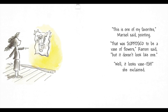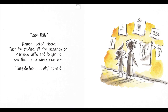"This is one of my favorites," Marisol said, pointing. "That was supposed to be a vase of flowers," Raymond said, "but it doesn't look like one." "Well, it looks vase-ish," she exclaimed. Vase-ish? Raymond looked closer. He studied the drawings and began to see them in a whole new way. They do look ish, he says. Wow, as he sees them in a whole new way, it seems like he's starting to realize it's okay — his drawings aren't just right.